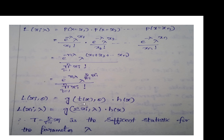Now we convert this likelihood function to the factorization theorem format. We write G of T of X, theta as the part depending on the parameter lambda, which is e to the power minus n lambda into lambda to the power summation Xi — where T of X equals summation Xi. Then H of X equals 1 divided by the product of Xi factorial, which is independent of lambda. Therefore, capital T equals summation Xi is the sufficient statistic for the parameter lambda.